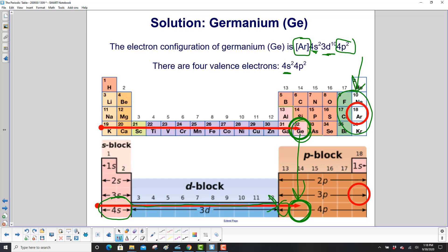So we have argon, 4s2, 3d10, 4p2. There are four valence electrons, the 4s2 and 4p2 electrons.